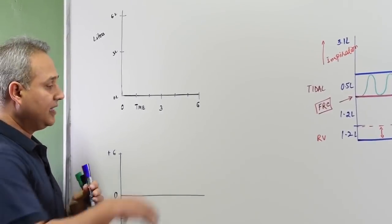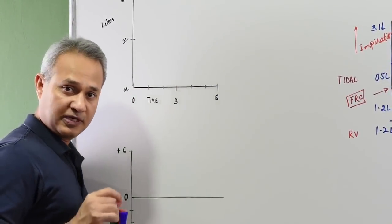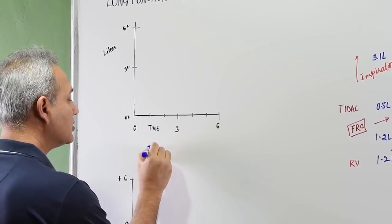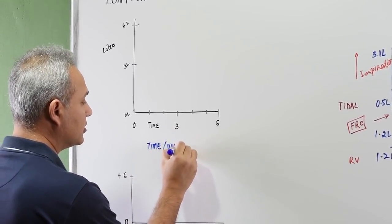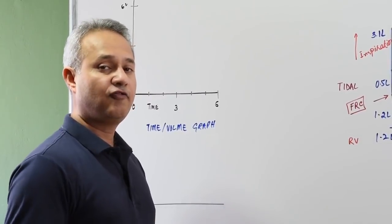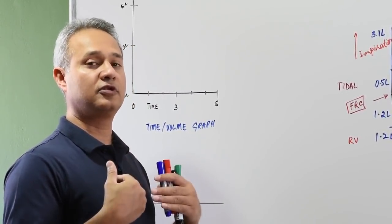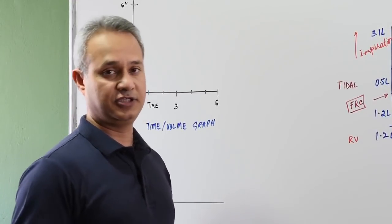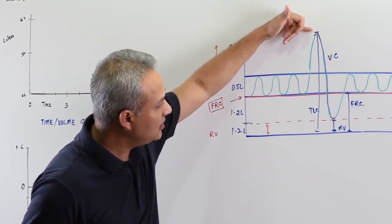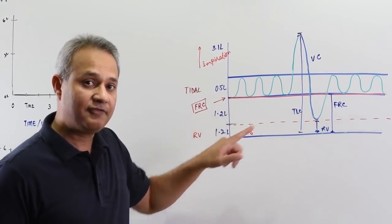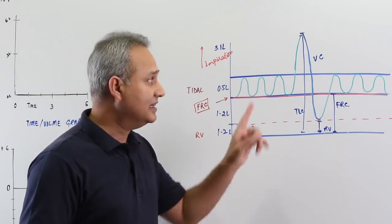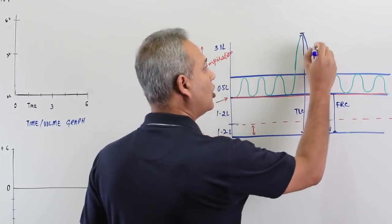Here are two charts for spirometry. The first one is simply the time-volume graph — you ask the patient to take a forceful inhalation and then do a forceful expiration. Remember that the vital capacity goes from the full breath in to the full breath out. However, if you ask the patient to do this in a forceful, rapid way, this VC is called FVC — forced vital capacity.